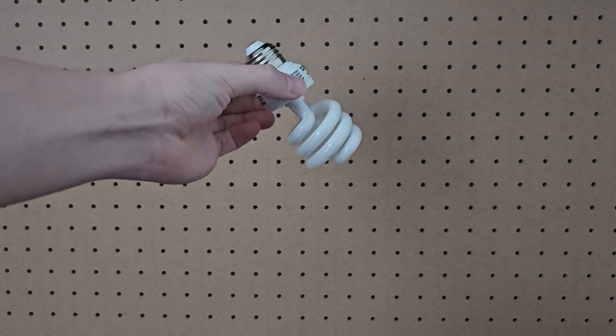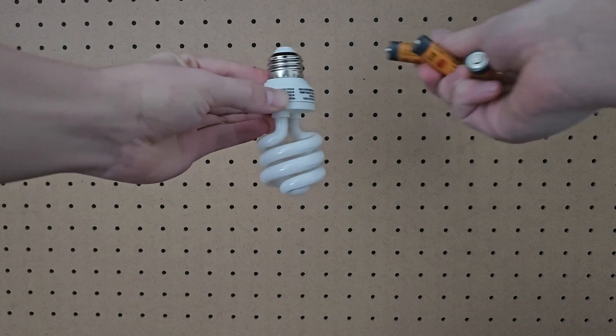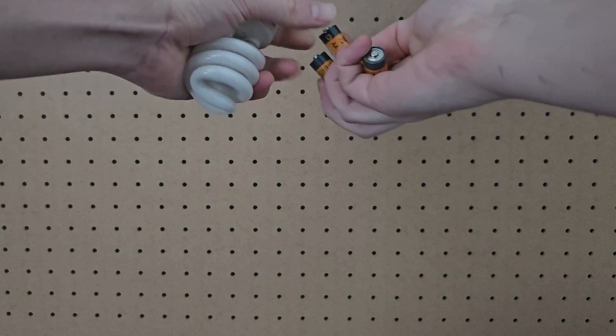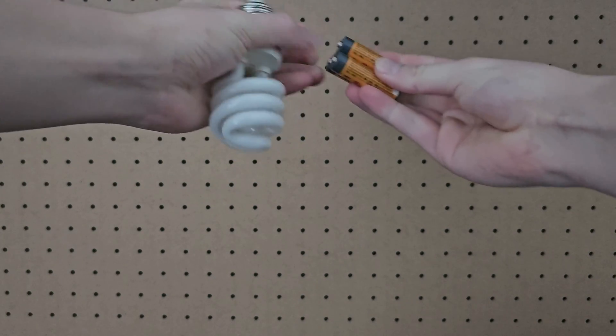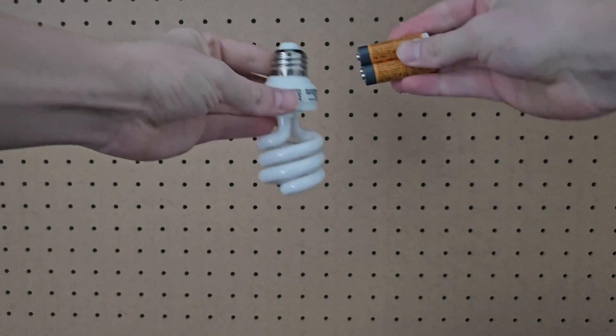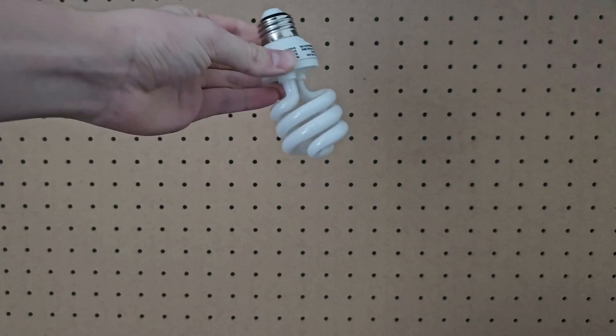A single AA battery can't turn on a standard light bulb because it can only provide about a third of the current that the light bulb would need. However, if you take three AA batteries and put them in parallel, the light bulb will be able to turn on, although it can't achieve full brightness.